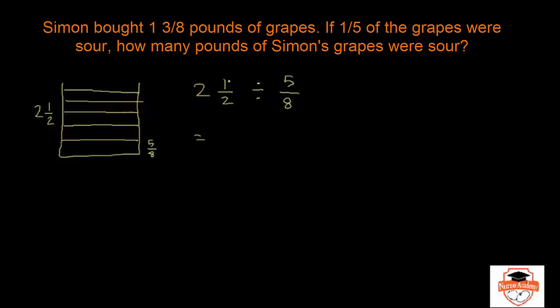To divide you need to change this mixed number to an improper fraction. 2 times 2 is 4 plus 1 is 5. 5/2 divided by 5/8.